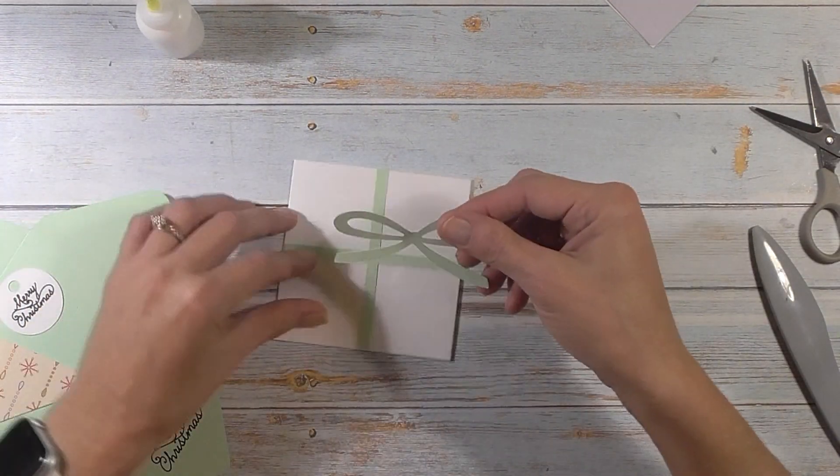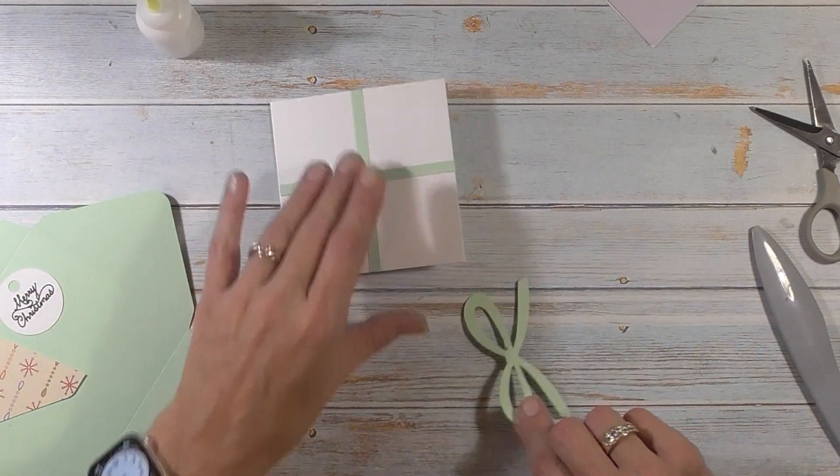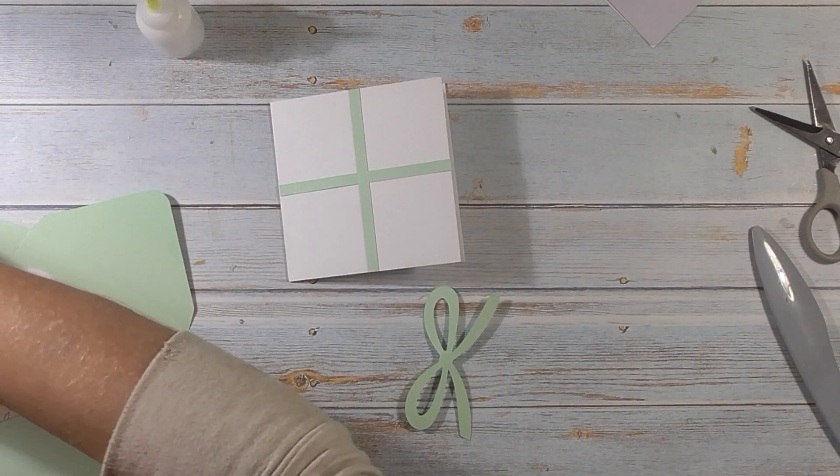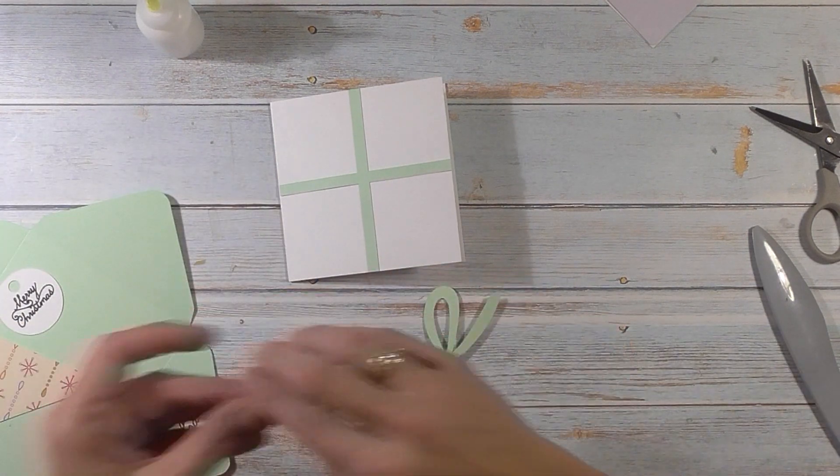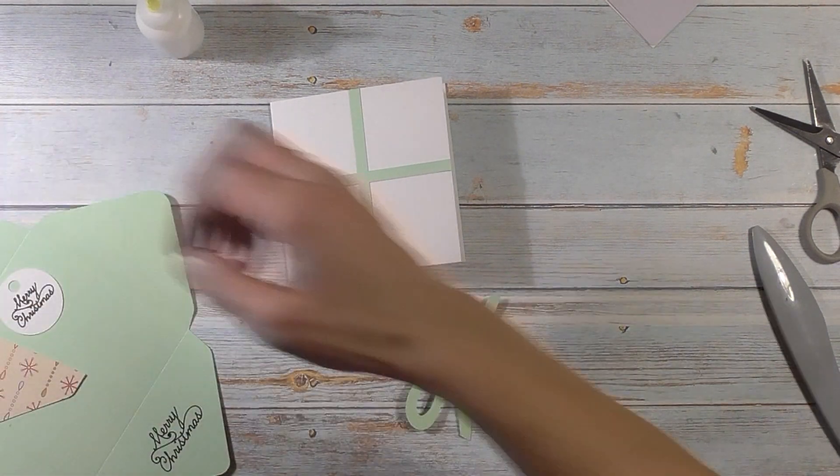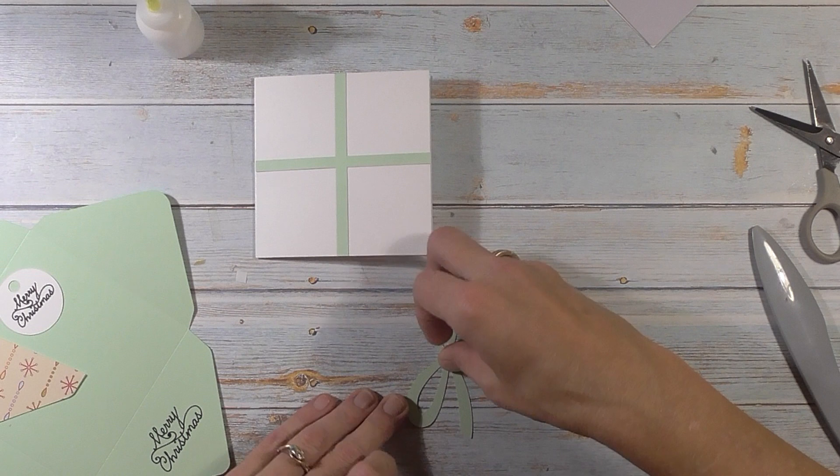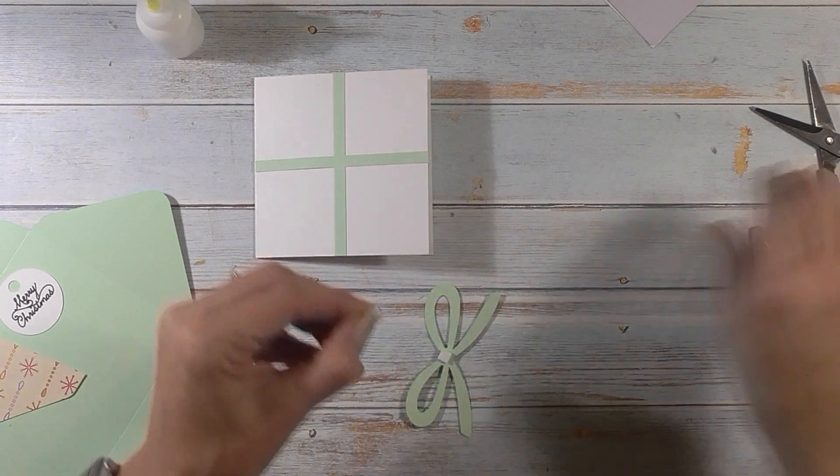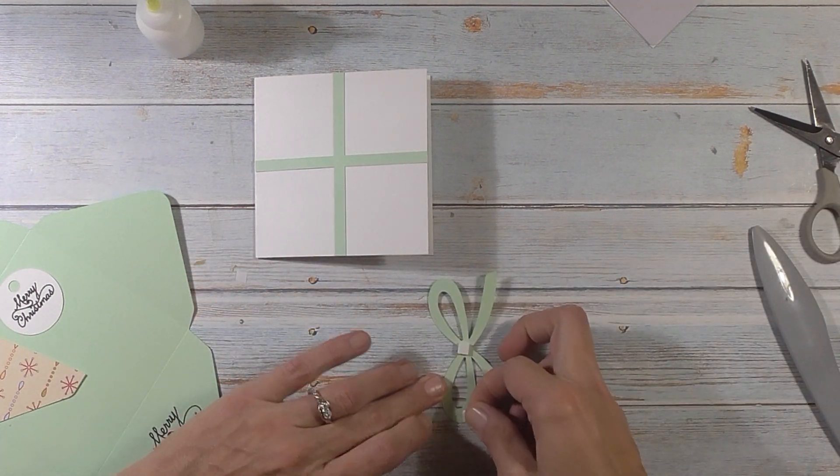Now we have the bow. I do want to pop the bow up so I have some foam squares over here. I'll do one right in the middle. I'm actually going to cut, actually I'm not going to cut it. I think I can do it.